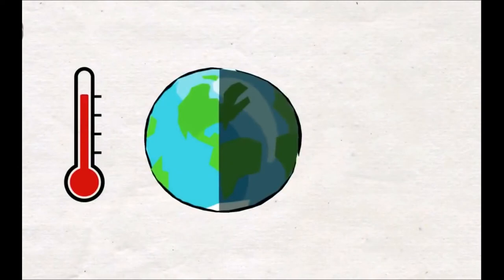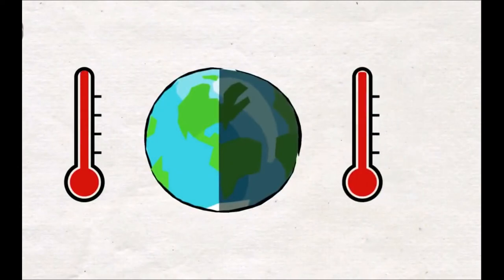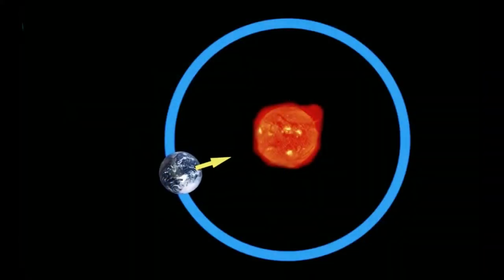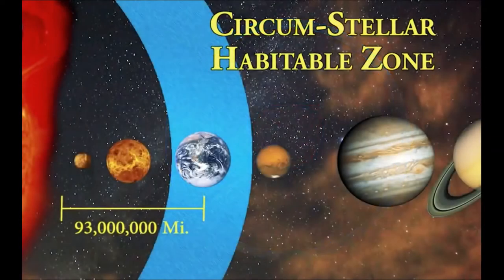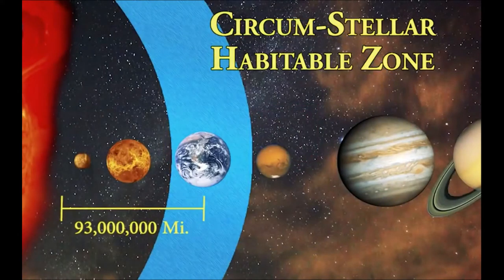Our tidally locked Earth would have half of the planet always facing the sun, and the other half would be in permanent darkness. Currently, our planet is in what is called a Goldilocks zone, or habitable zone, where it is the perfect distance from our sun in order to support life.